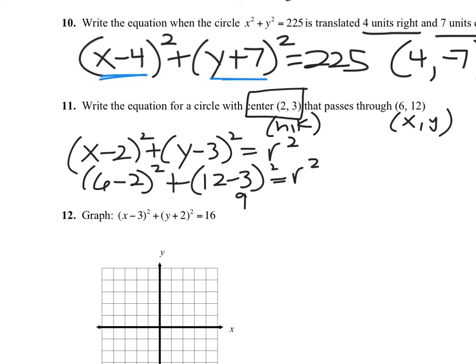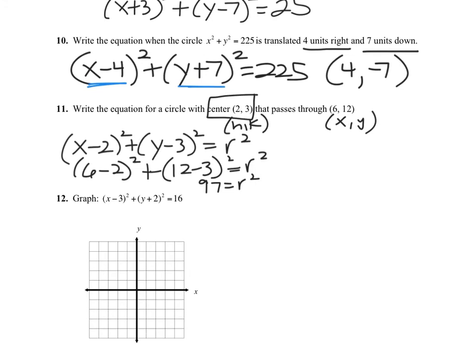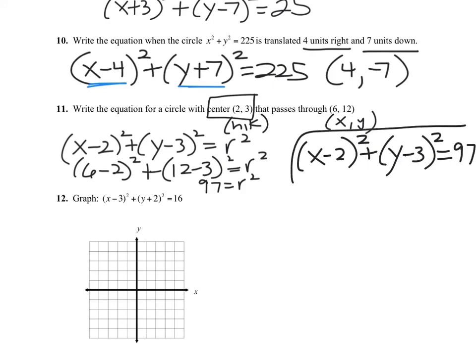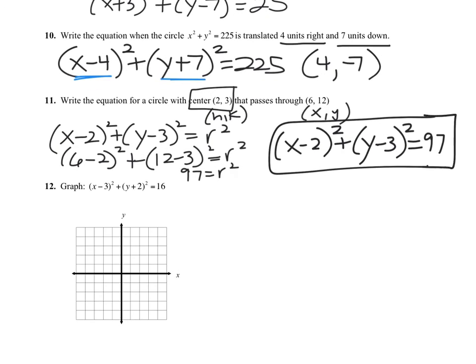Use your calculator if needed — parentheses 6 minus 2 squared plus parentheses 12 minus 3 squared equals 97. Don't stop there though — the answer is the full equation: (x minus 2) squared plus (y minus 3) squared equals 97. Every year students stop at 97 without completing the equation, and they lose points.